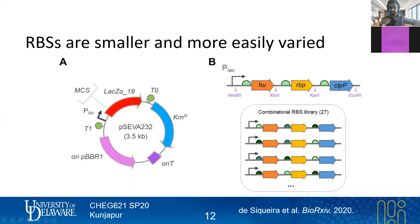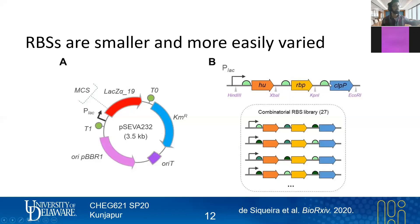So if you want to overexpress three different genes and you want to express them all differently at different strengths, if you want to focus on a promoter, you need three different promoters, which means you also need three different terminators, and you need effectively three different cassettes. Whereas if you want to do this more commonly — especially if you generally want them all on at the same time — then just have them under the same promoter, and now you've got the small region in front of each of them that is their RBS.